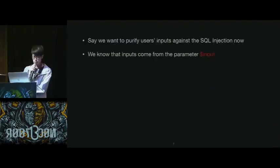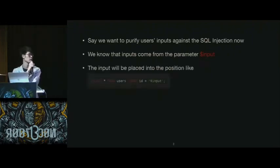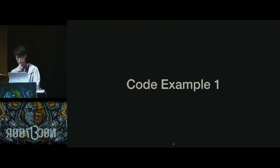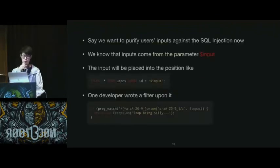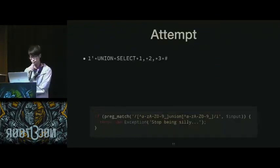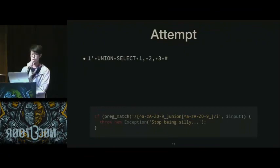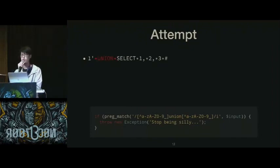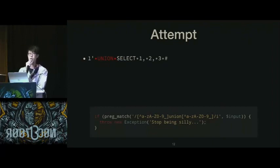Here is a scenario: we have a user-side input, and this input will be concatenated to the end of this query. As you can notice, it is subject to SQL injection. Our developer noticed it too, and wrote a filter to guard against possible SQL injection attacks. I'll attempt to bypass this filter. Here is my first initial input, which is the classical union-based SQL injection attack. However, it was blocked due to the spaces, as spaces are not alphanumeric characters. So this filter is basically checking both sides of the keyword UNION to see if there are non-alphanumeric characters at those positions. I slightly modified the original one — comments can replace spaces. However, slashes are not alphanumeric characters as well, so this one will be blocked too.